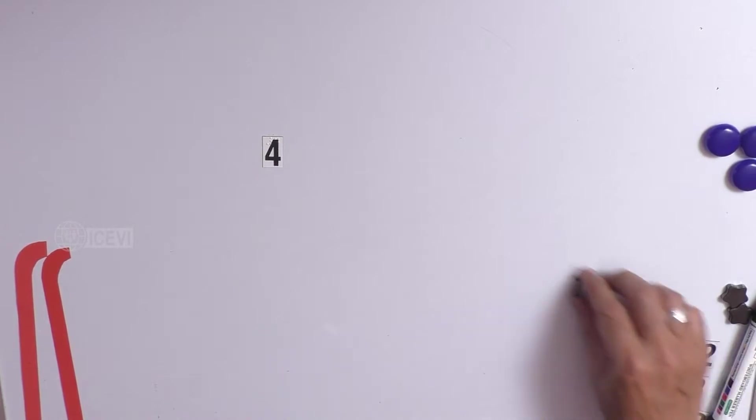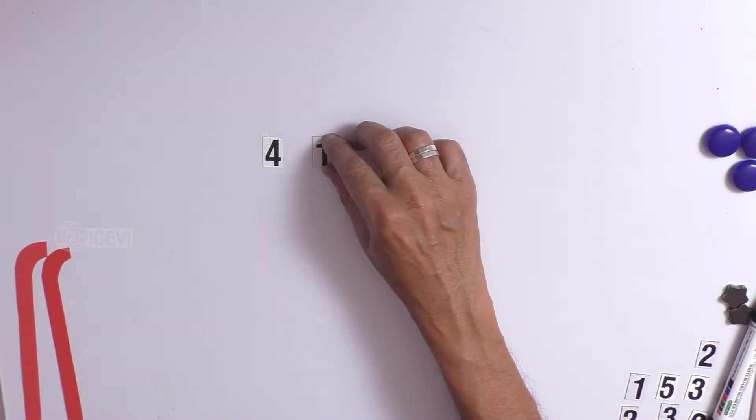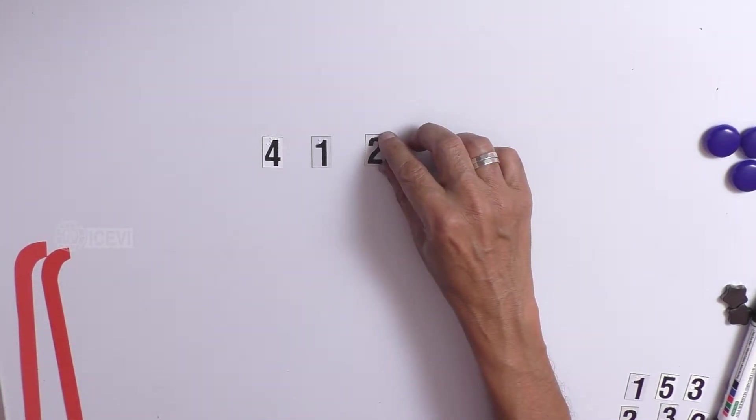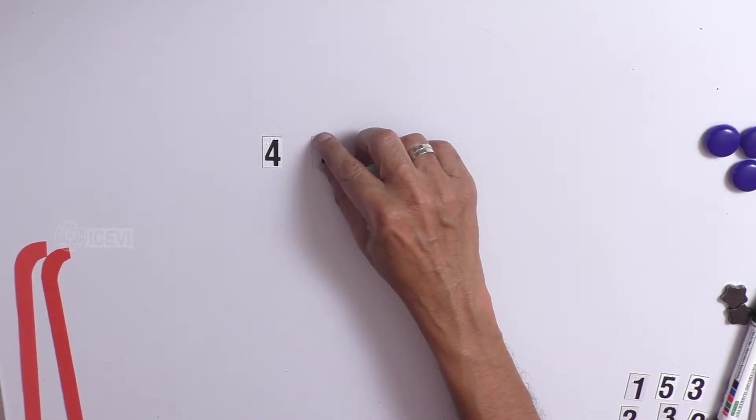Let us take the first row. Here, the first row is 4, 1 and 2. The first row has 4, 1 and 2.